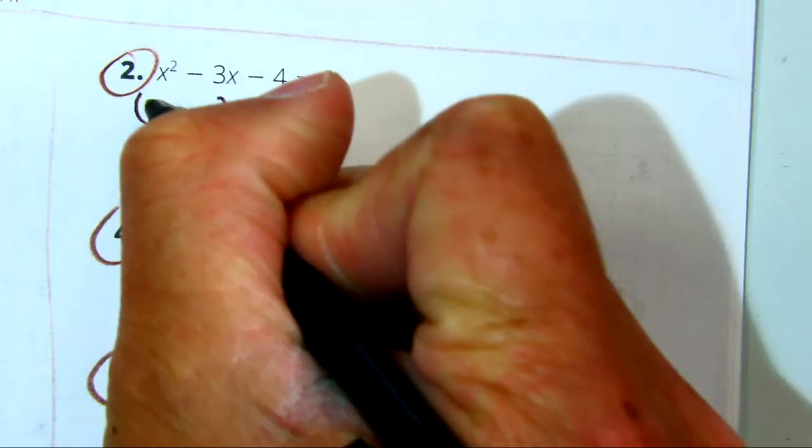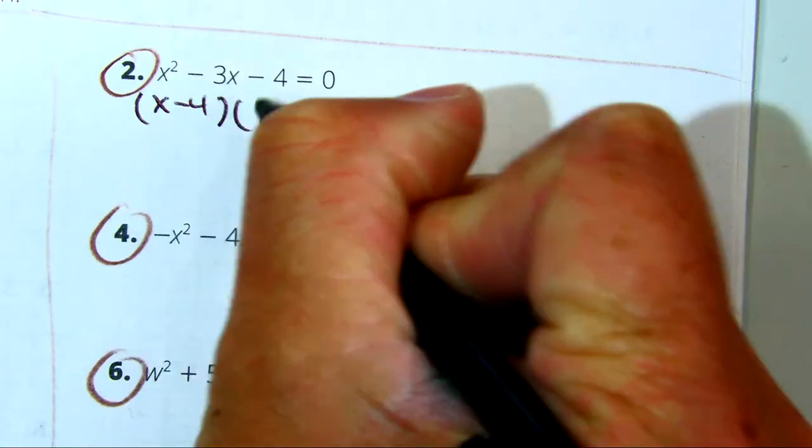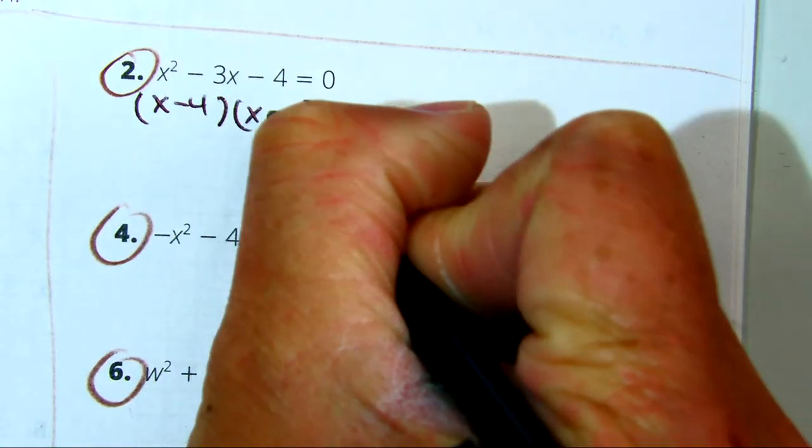So, x minus 4? Yeah, x minus 4 and x minus 1. Alright, x plus 1. Yeah.